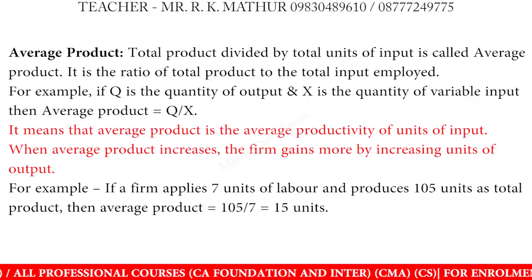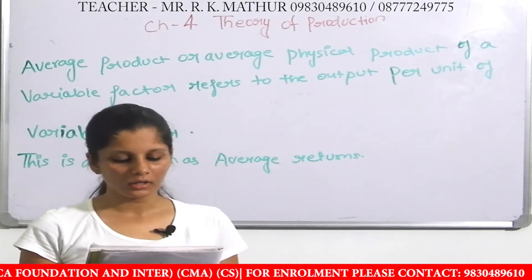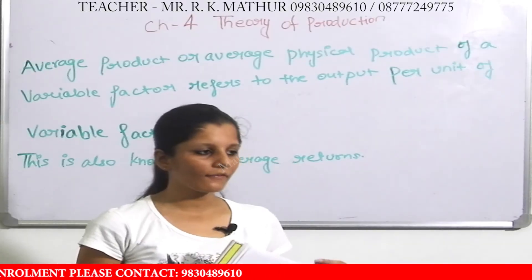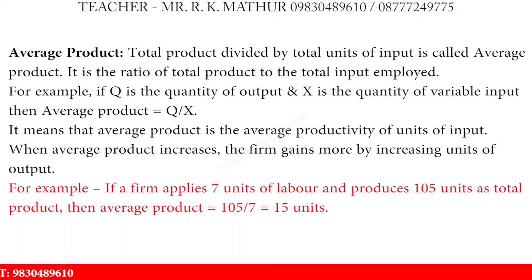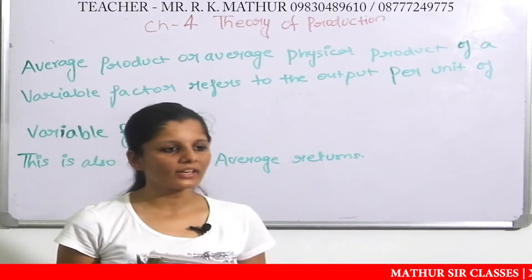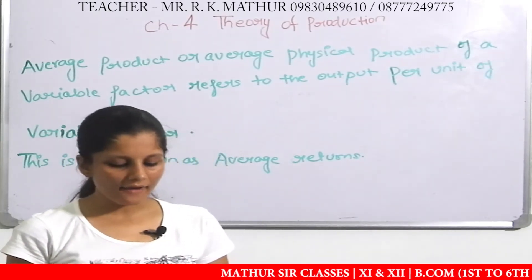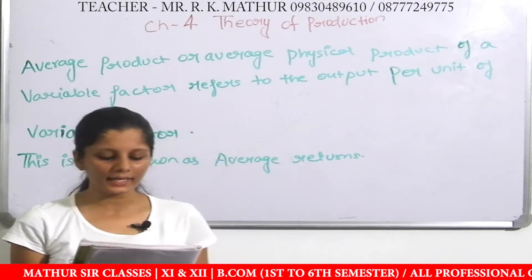Average product is the average productivity per unit of input. When average product increases, the firm gains more by increasing output — the firm has more profit. For example, if a firm applies 7 units of labour and produces 105 units of total output, then average product = 105 divided by 7 = 15 units.